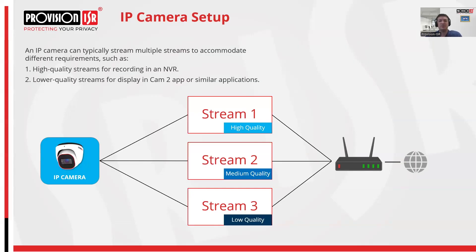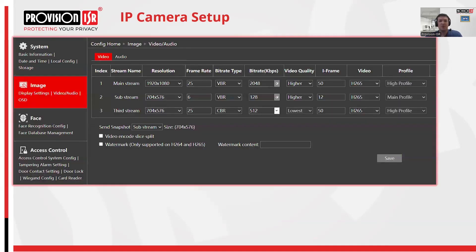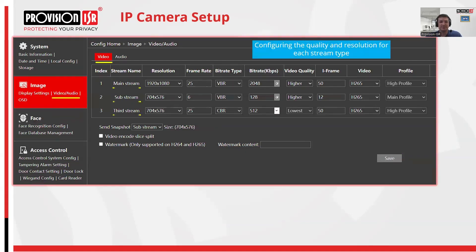High-quality streams are typically used for NVR recording to ensure clear and detailed footage. Additional streams are optimized for applications like remote viewing or management software, providing flexibility in how the video is accessed and utilized. We can set the qualities of each stream in the video window. For instance, we can configure the primary stream to display at high resolution, while the secondary stream can be set to appear at a much lower resolution.